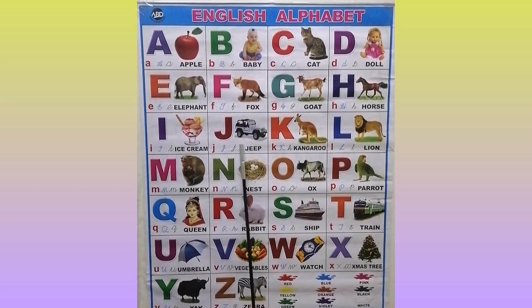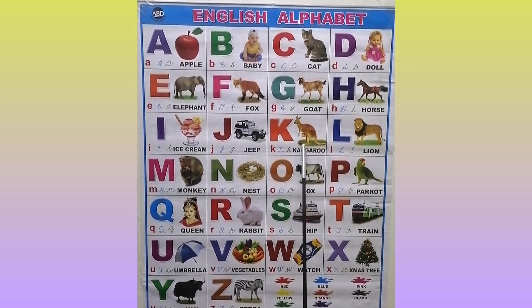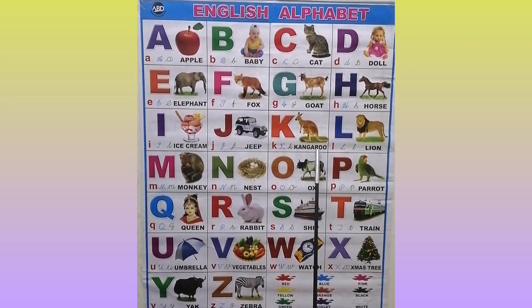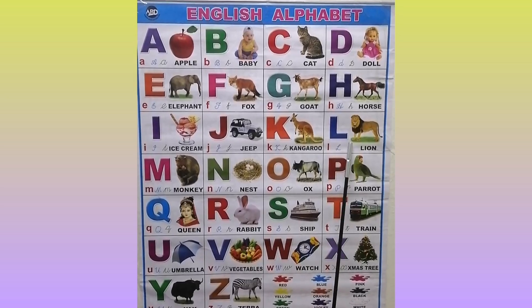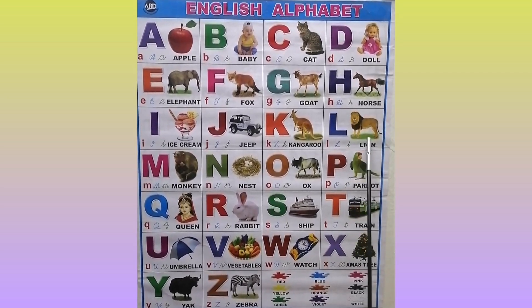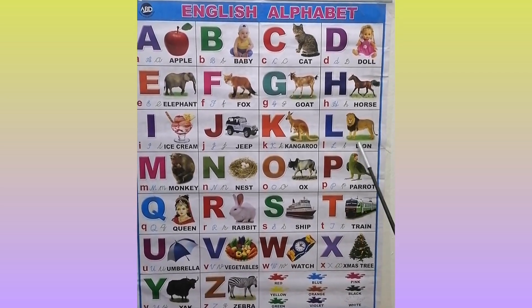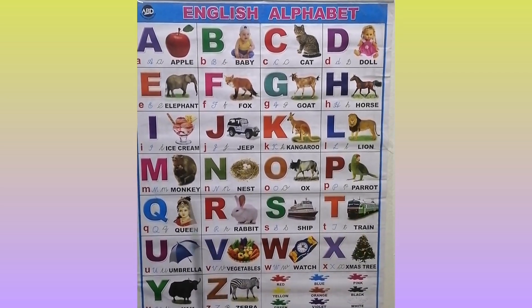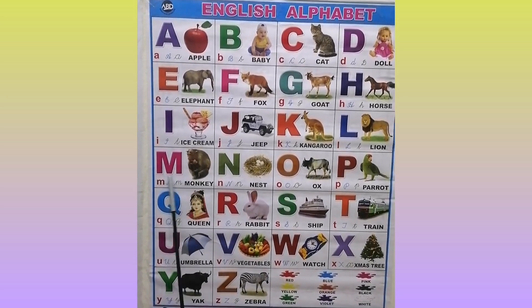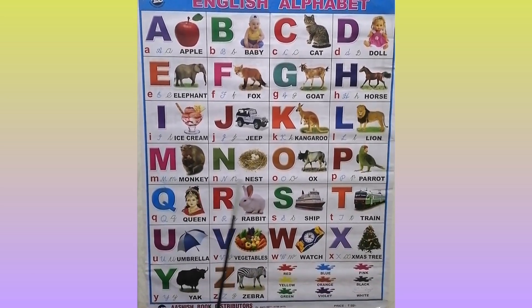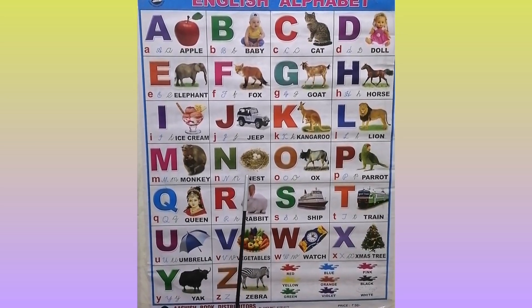B for sheep. B for cow. B for lion. B for monkey. B for nest.